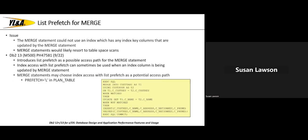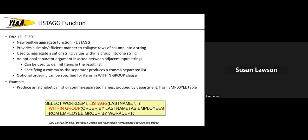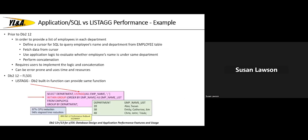List prefetch is now allowed in a MERGE operation. In version 13 FL503, you have the ability to support OPTIMIZE FOR n ROWS on a SELECT INTO. Additionally, LISTAGG is a built-in function that came out in version 13 FL501 that offers some interesting capabilities — the example shows usage starting in 501.